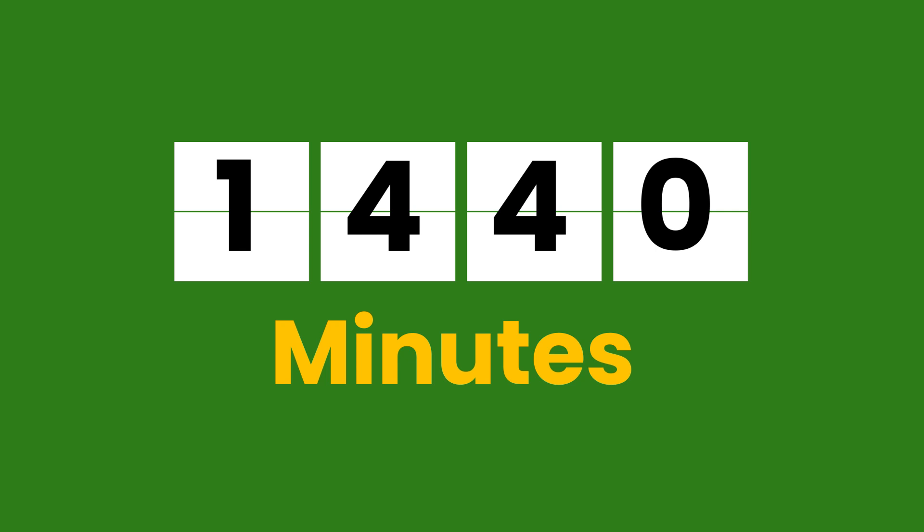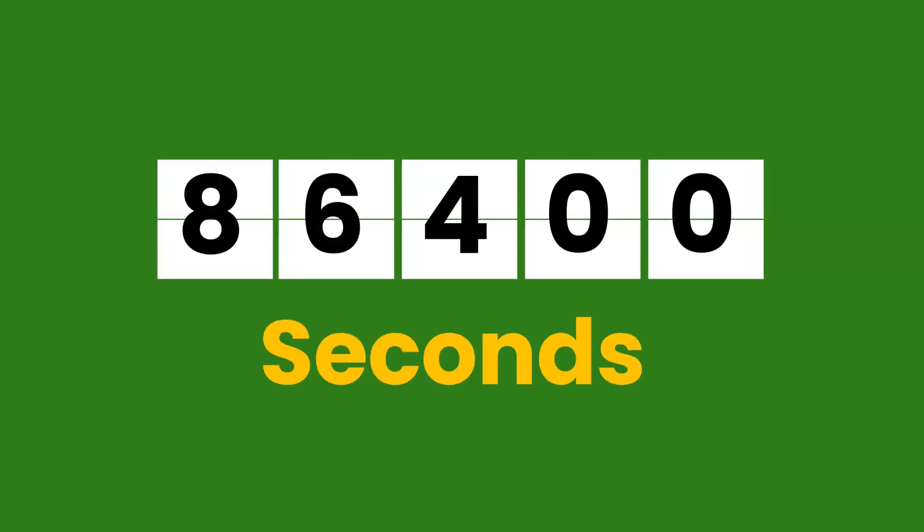Our current convention gives us a very convenient way of handling time. One day is 24 hours, which is 24 multiplied by 60 — 1,440 minutes — multiplied by 60 — 86,400 seconds. This allows us to understand one-half, one-third, one-fourth, one-fifth, and one-sixth of parts of time extremely easily without having to deal with decimals.